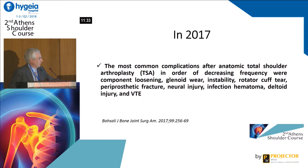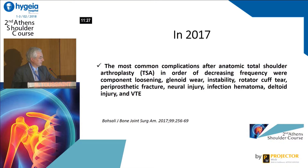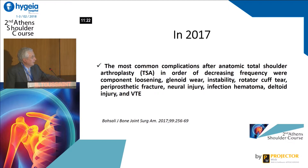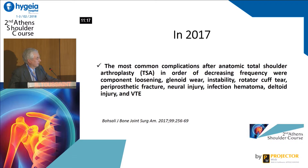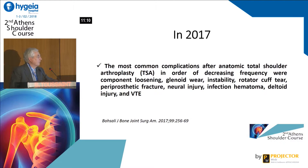The most common complications after anatomic total shoulder arthroplasty, in order of decreasing frequency, were: component loosening, glenoid wear, instability, rotator cuff tear, periprosthetic fracture, neural injury, infection, hematoma, deltoid injury, and venous thrombosis and embolism.